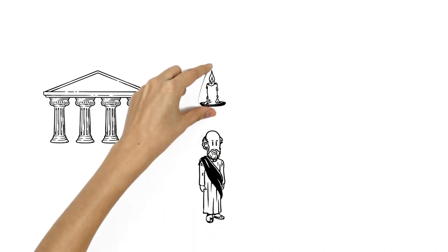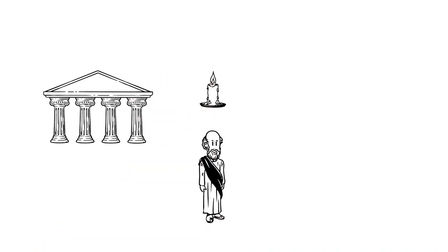Over 2,000 years ago in ancient Greece, the mathematician Archimedes came up with an explanation so good it eventually became known as the Archimedes Principle.